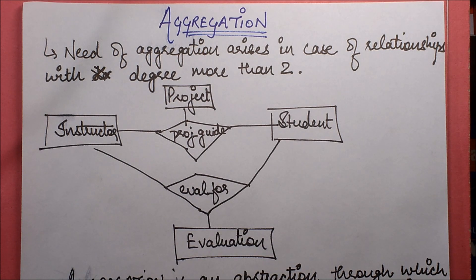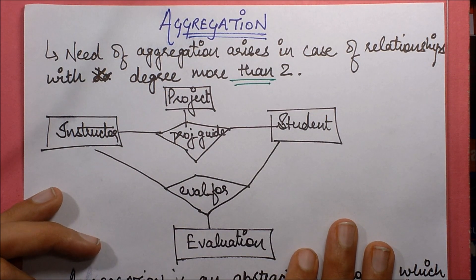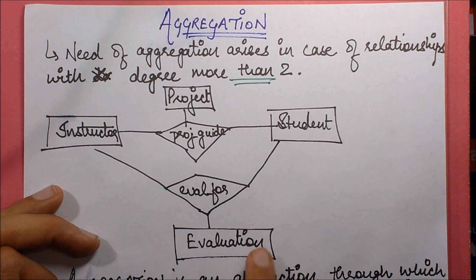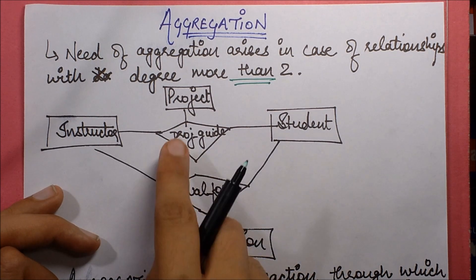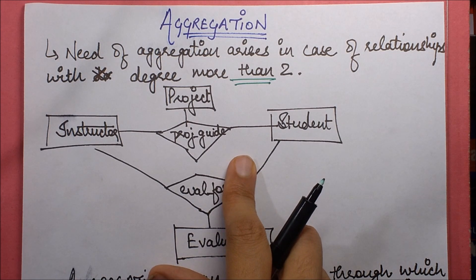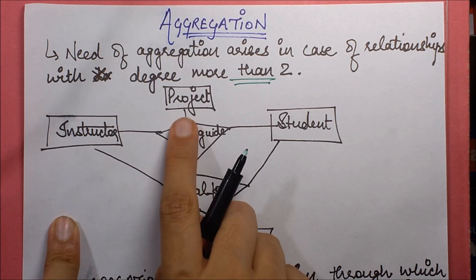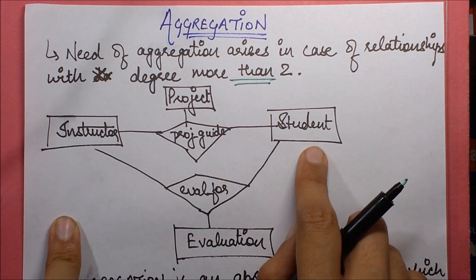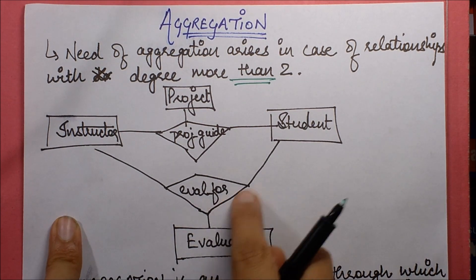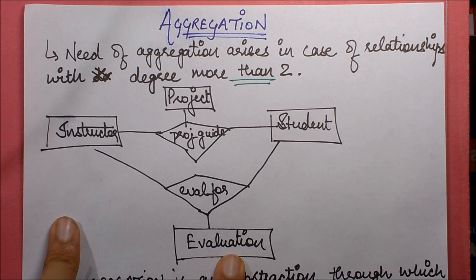The need for aggregation actually arises in relationships with more than degree two. For example, in the ER diagram discussed here, you may notice that there are four entities: instructor, project, student, and evaluation. The project guide relationship has degree more than two — degree three — where an instructor acts as a project guide on a particular project for a particular student, and also the instructor is evaluating that student for a particular evaluation task.